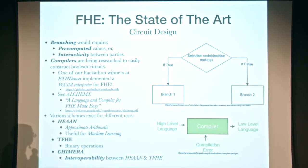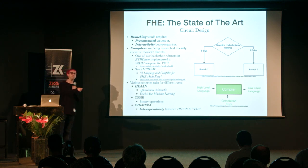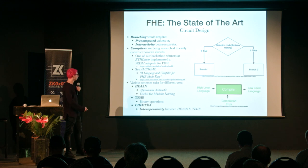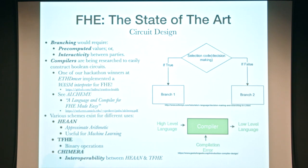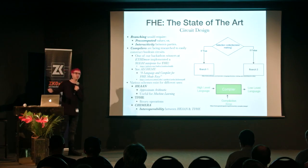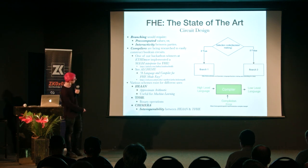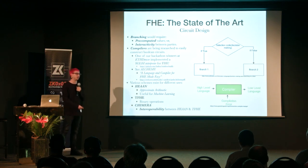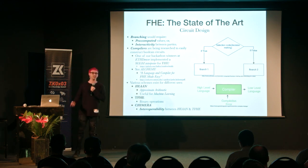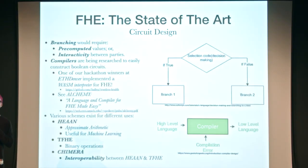Various schemes exist for different uses. If you want something different from binary logic gates, you can use HEAAN, which is great for machine learning — it uses approximate arithmetic, where you don't need an exact answer, just something approximate, to perform operations like neural networking. TFHE uses binary operations. And if you want to do both without using different schemes, there's a framework called Chimera that allows interoperability between HEAAN and TFHE, so you can go between different schemes and perform computations in either.